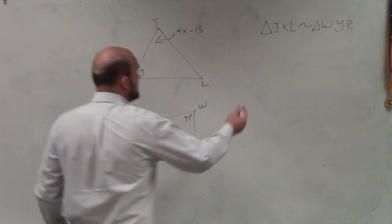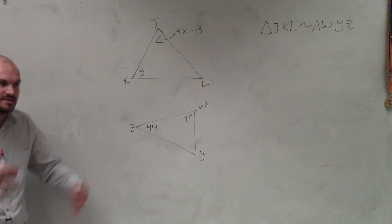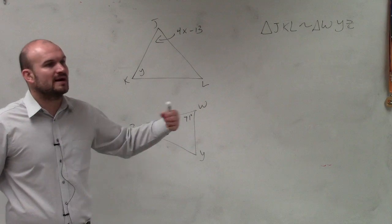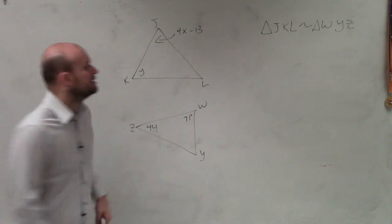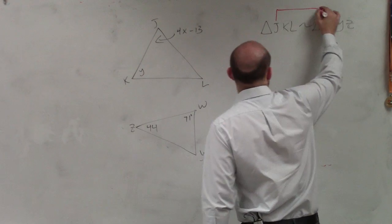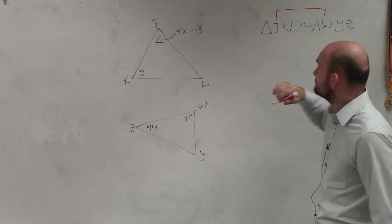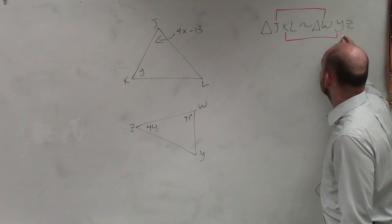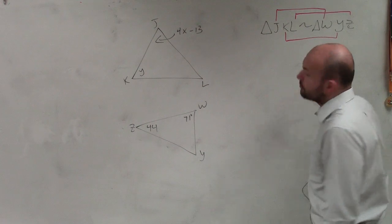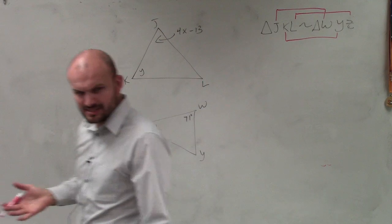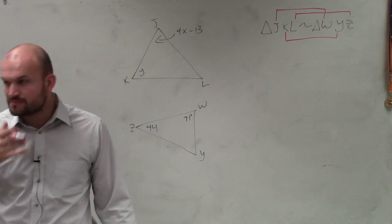Remember, when we say things are similar, we say things are congruent, we write them out in corresponding parts. So we know that J is corresponding to W, K is corresponding to Y, and L is corresponding to Z. Does that make sense? That's how we write our corresponding statements.